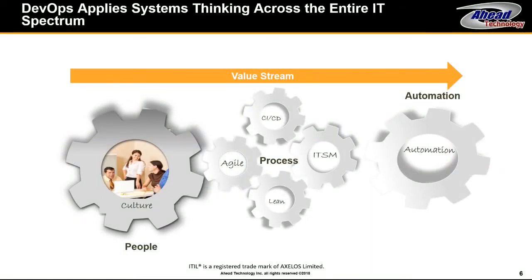Throughout the value stream, you're going to notice the traditional, as we call them, three P's: people, process, and products — where products are tools and technologies.